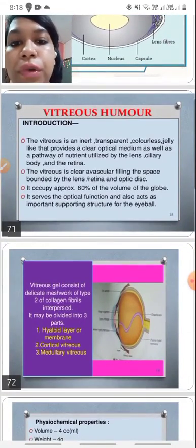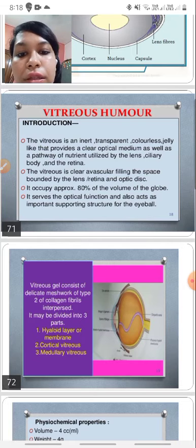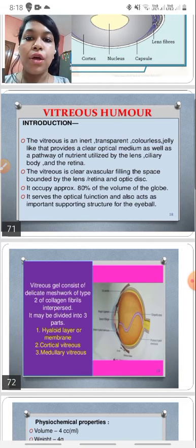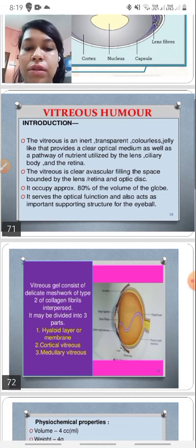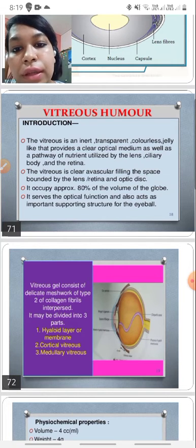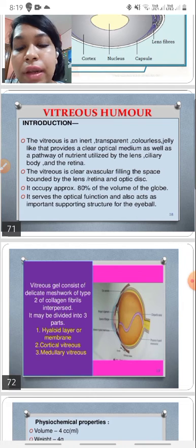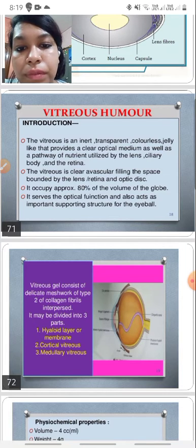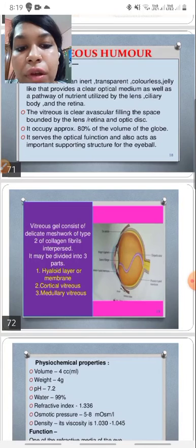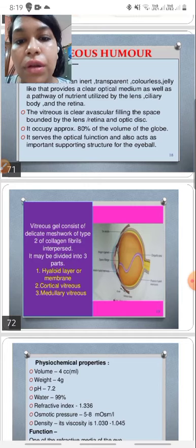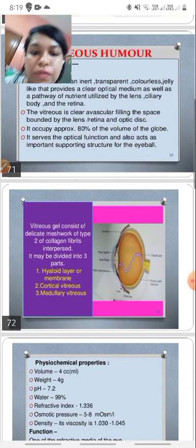Lastly, there is the vitreous humor. It is a transparent, colorless, jelly-like structure that provides a clear optical media as well as a pathway of nutrients, which is to be utilized by the lens, ciliary body, and retina. It is also clear and posteriorly by the optic disc and it occupies approximately 80% of the volume of the globe. Apart from having the optical refractive function, it has also got a role in supporting the structure of the eyeball.